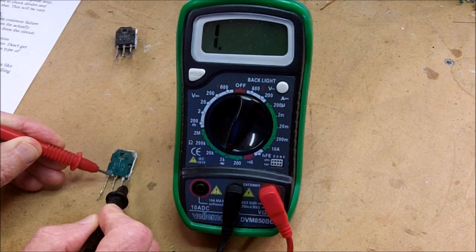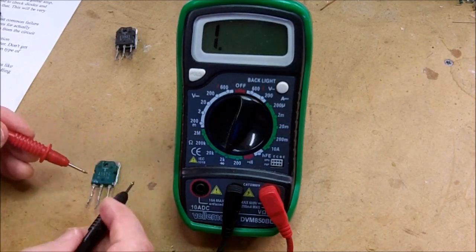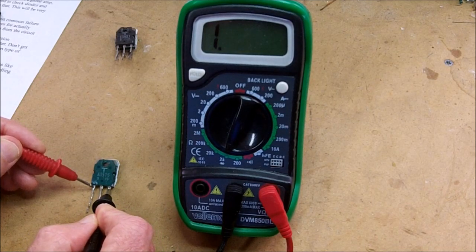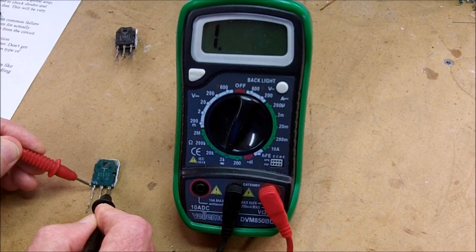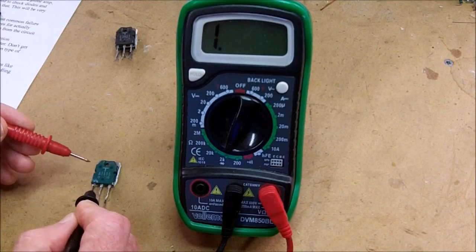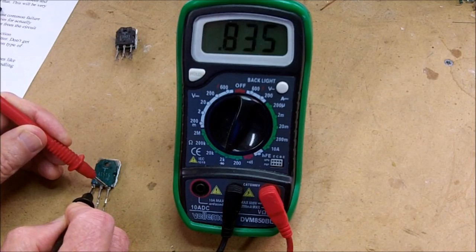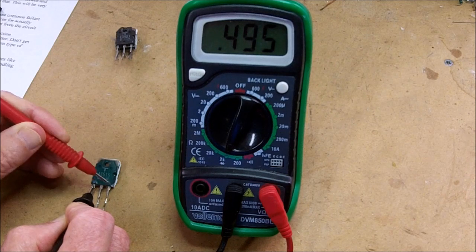Now, next we'll check between 1 and 3. And in this direction, with the red lead, the positive lead on the left, we get 1 or a high resistance. If we reverse them and put the positive lead on the right, then we get a 0.496, a low resistance. So that junction looks good.